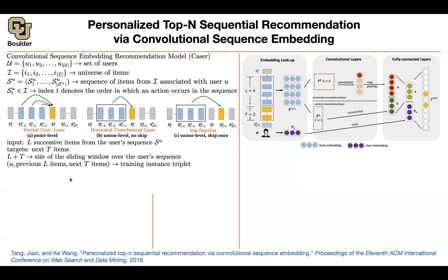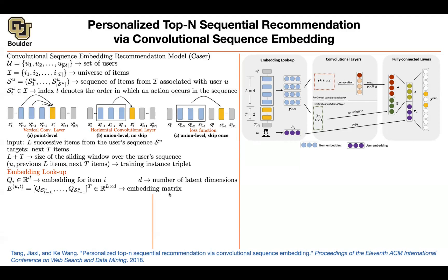What information do you have? You have U — you know your user ID. You know the previous L items that this user was clicking on, and you are predicting the next T items. This is your training data — this is how it's going to look: the user, the sequence, and L plus T gives you the window. Because you're dealing with integers, you're going to have embedding matrices for lookup — similar to dictionary lookups in language. D is a hyperparameter you choose; it's the dimension of your embeddings.